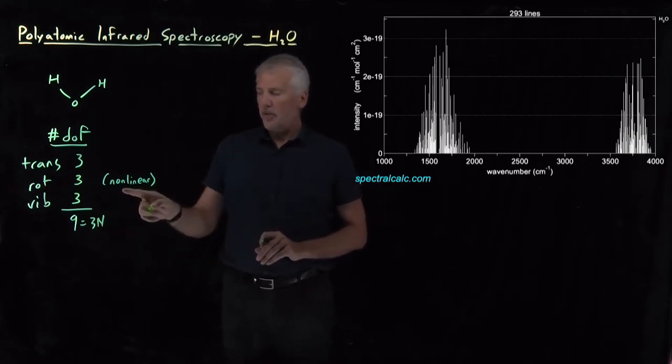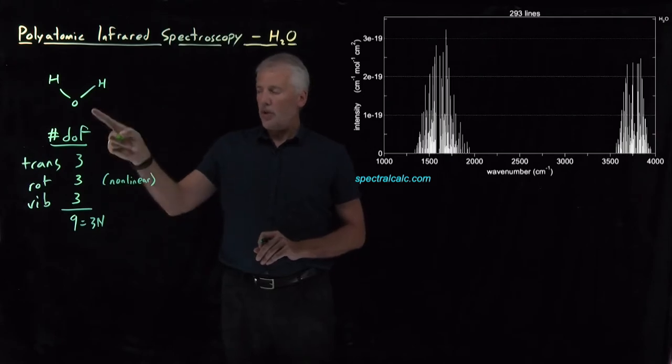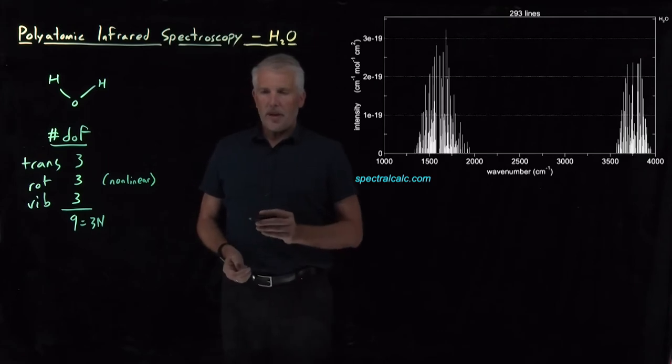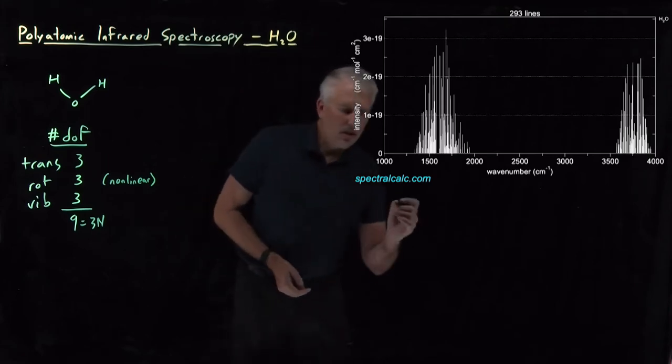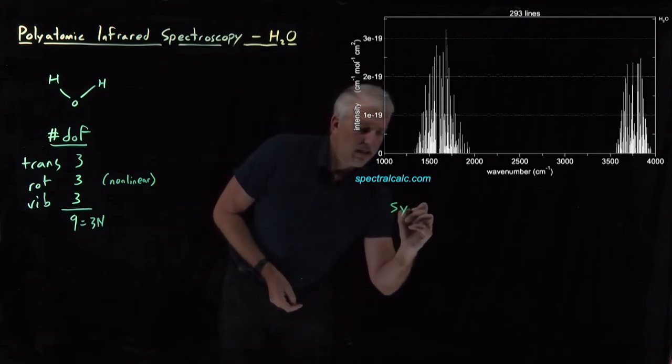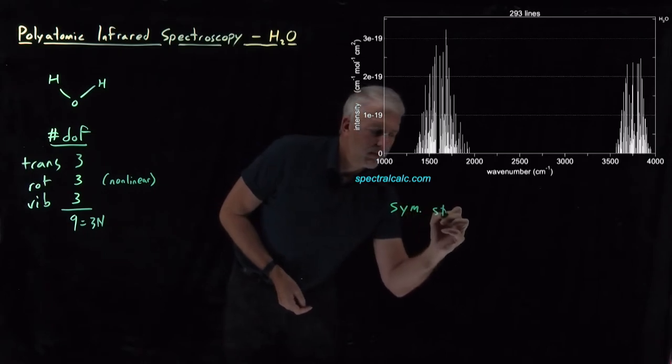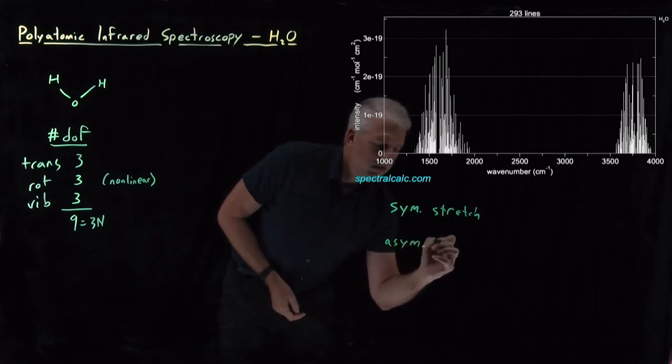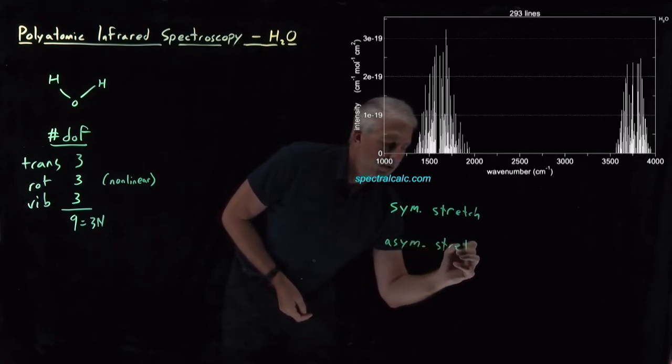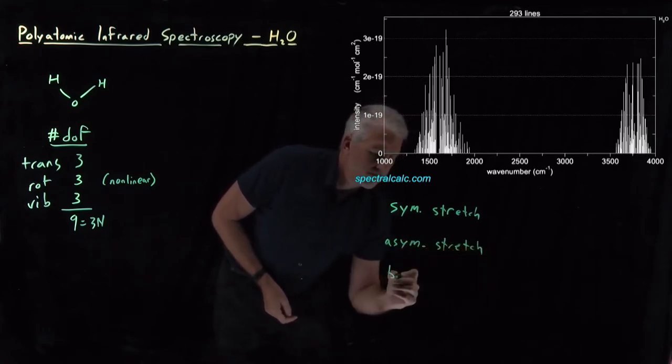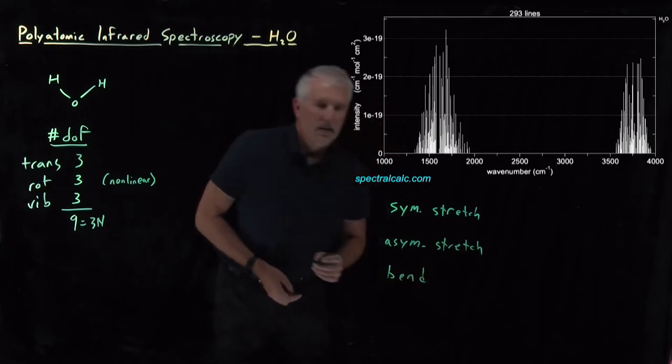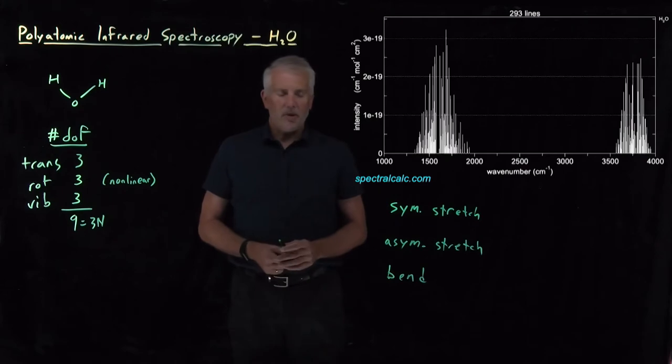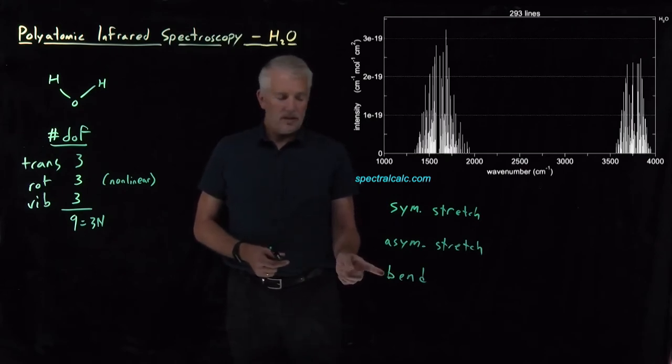Unlike a linear molecule, this non-linear water molecule only has three vibrational motions rather than four. If we categorize what those vibrational motions are, there's again a symmetric stretch, an asymmetric stretch, and a bending mode. The difference with a linear triatomic molecule being now there's only one distinct bending mode.